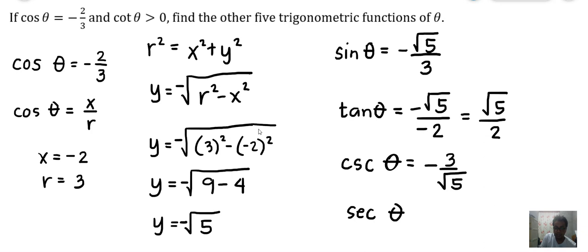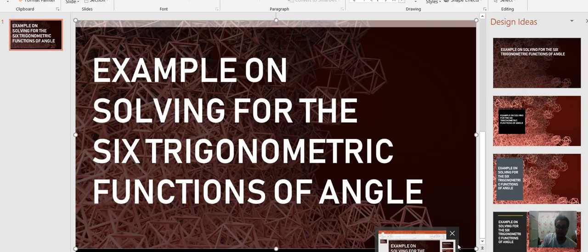Secant of θ is the reciprocal of cosine. Cosine is -2/3, so this is -3/2. And then the last one is cotangent of θ. Cotangent of θ is the reciprocal of tangent, so this is 2/√5.